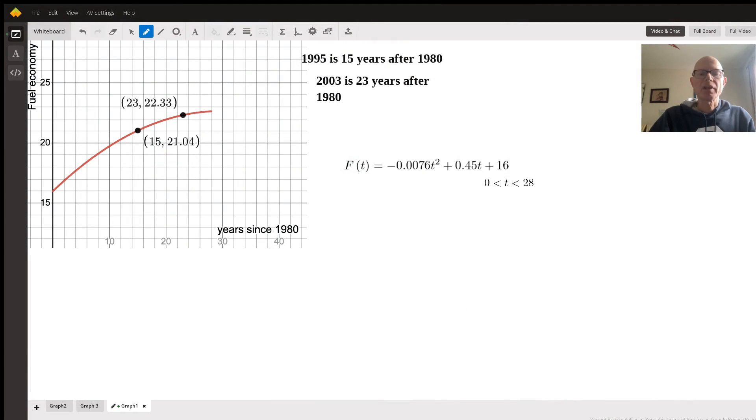Hi, this question is asking us to evaluate the average rate of change over the interval 0 to 28, where T is representing the number of years since 1980.